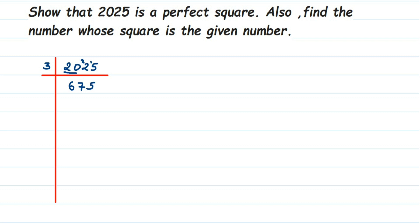This is a shortcut I'm using here — instead of dividing and writing each step separately, I write the remainder with the next number, combine it, and continue dividing. It's an easy and fast method. If you have your own method, follow that — you'll get the same answer.